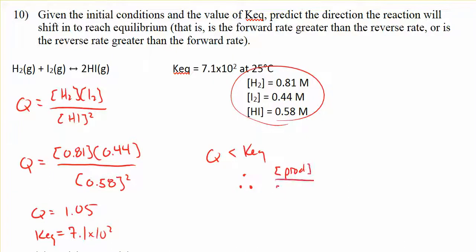The fraction products divided by reactants, initially, that's Q, is too small. That is, that ratio is not equal to Keq yet. Therefore, what needs to happen is that quotient needs to become larger.